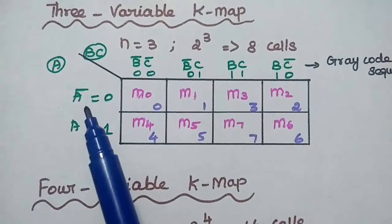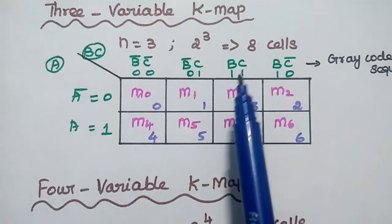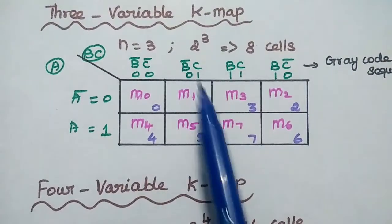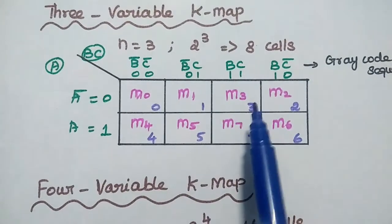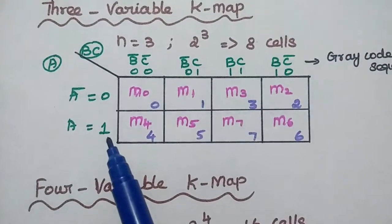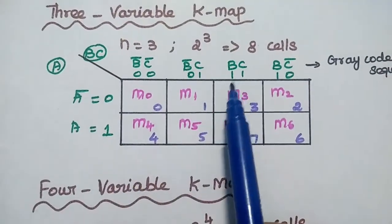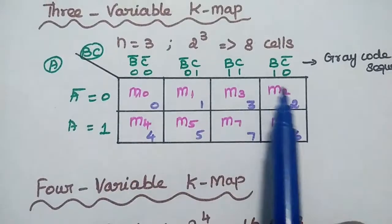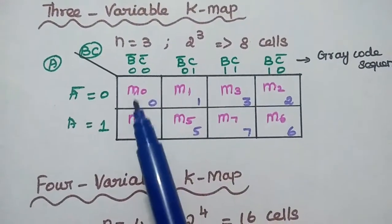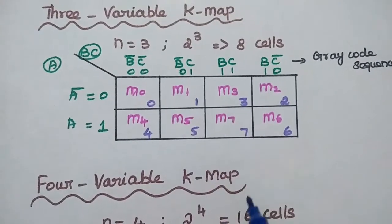We represent A-bar equals 0 and A equals 1 for rows. The columns are B-bar C-bar (00=0), B-bar C (01=1), BC (11=3), and BC-bar (10=2). For the second row: A=1 gives cells 4, 5, 7, and 6 respectively. So the K-map cells are represented as m0, m1, m3, m2, m4, m5, m7, and m6.